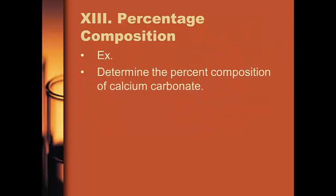Figure out the percent composition of calcium carbonate. First, we need to know the formula for calcium carbonate. There is no prefix in front of the second name, so this must be ionic — you need your ions. Calcium is Ca²⁺, carbonate is CO₃²⁻, so the formula must be CaCO₃. Since we are figuring out the percent composition, we need to find the composition for each element: calcium, carbon, and oxygen. Taking one mole of calcium carbonate means we have one mole of calcium, one mole of carbon, and three moles of oxygen.